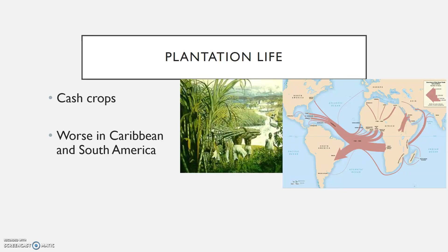North American slavers imported more women — not more women than men, just more women than what you'd see imported into the Caribbean and South America — and they encouraged slaves to have children in order to sustain slave populations. Plus, while conditions in North America on plantations were not easy on slaves, they were a good bit better than in South America. Slaves were not literally worked to death; they were looked at as being more of an economic investment, and not one that could be readily resupplied from Africa.